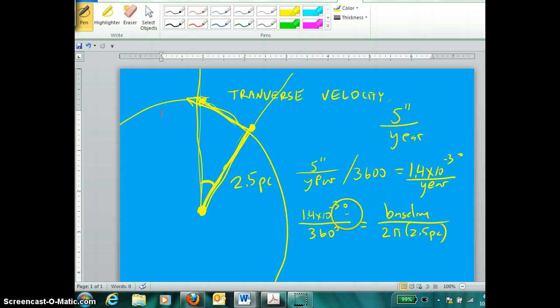Once again, angle of parallax is to 360 degree angle as the small length known as baseline is to the entire circumference of a circle. When we do the calculation, we would get as an answer roughly 6.1 times 10 to the negative 5th parsecs. We're still dealing with parsecs in one year's time.